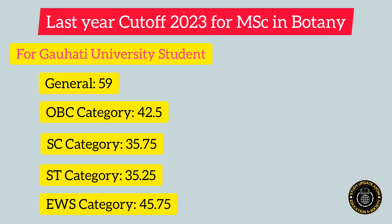First of all, we are going to look at the last year cutoff for MSc in Botany for Gauhati University students — meaning those who have completed their graduations under Gauhati University itself or its affiliated colleges. For General category, the cutoff was 59. For OBC category, the cutoff was 42.5. For SC category, the cutoff was 35.75.